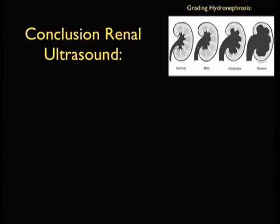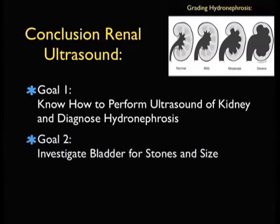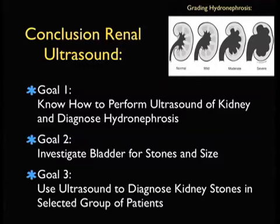In conclusion, thanks for joining me for this SoundBytes module on genitourinary ultrasound. Goal one: you should now be able to perform ultrasound of the kidney and diagnose hydronephrosis from mild grade one through moderate to severe grade three. Goal two: investigate the bladder closely to detect stones that have migrated to the UVJ, assess bladder size, and use Doppler to evaluate ureteral jets. Our overriding goal is to use ultrasound to diagnose kidney stones as an alternative to CT scanning in selected patients.